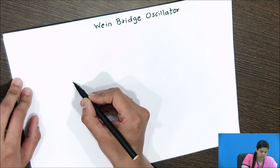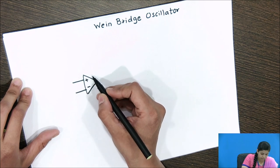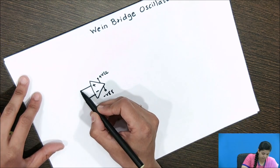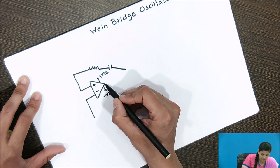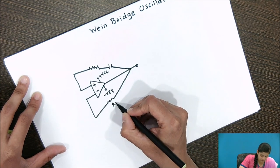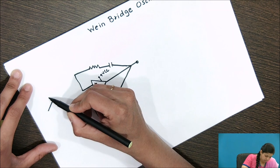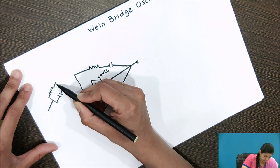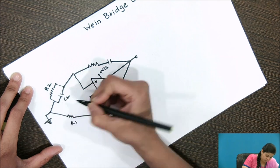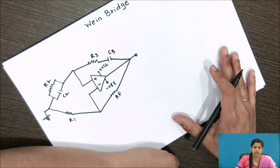For the Wien bridge oscillator circuit, we will require the operational amplifier. We will provide the Vcc and minus V supply. We will include one resistor, one resistor and a capacitor in series, one feedback resistor which is RF, and then one more RC network which will be a parallel R1 resistor. Let us call them R2, C2, and R3, C3. This is the circuit of Wien bridge oscillator.